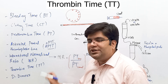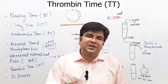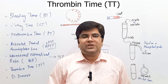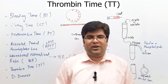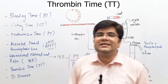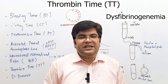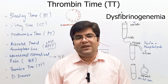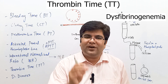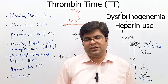The next clotting test is thrombin time (TT). To determine TT, activated clotting factor 2 — thrombin — is added into blood, converting fibrinogen into fibrin. The normal value of thrombin time is 10 to 15 seconds. It is prolonged in dysfibrinogenemia, where fibrinogen level is normal but the fibrinogen protein is not functioning normally, and also when heparin is being used as a treatment.